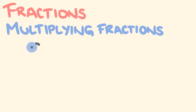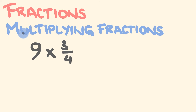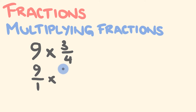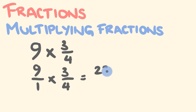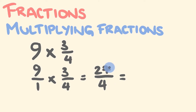What about nine times three-quarters? This nine becomes nine over one, multiplied by three over four. Top times top, bottom times bottom: nine threes are twenty-seven, one times four is four, giving twenty-seven over four. We can simplify this by converting to a mixed number: twenty-seven divided by four is six with three left over, so the answer is six and three-quarters.